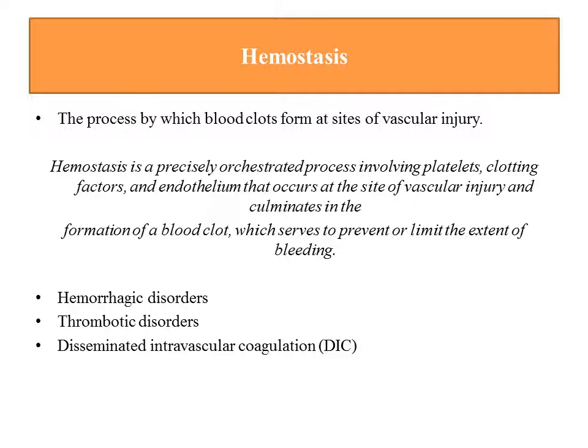Both pro-thrombotic and anti-thrombotic factors are very necessary for normal life. The balance can be shifted to either side. If anti-thrombotic proteins are more active, there may be a bleeding tendency or hemorrhagic disorders. If pro-thrombotic factors are more active, there may be a thrombotic tendency. A third possibility is disseminated intravascular coagulation — formation of microthrombi — which utilizes platelets and coagulation factors, resulting in both thrombotic and bleeding tendency.